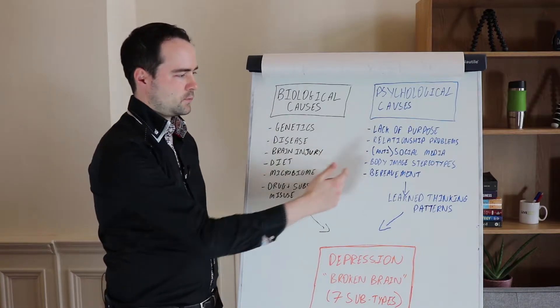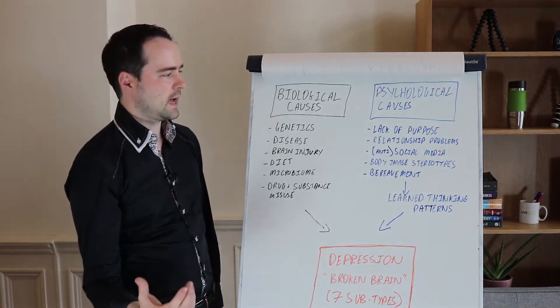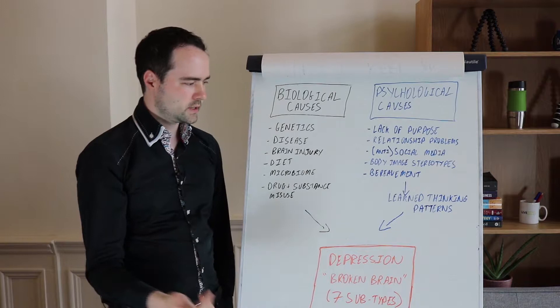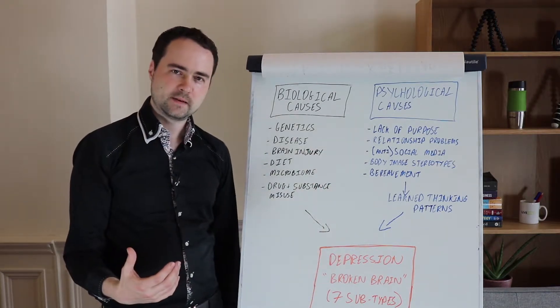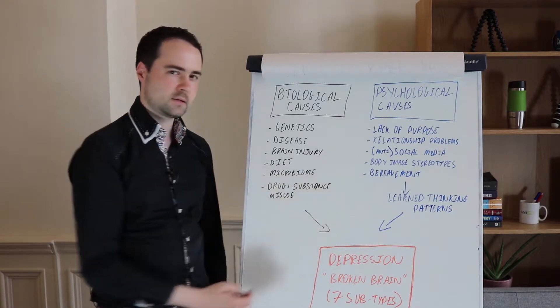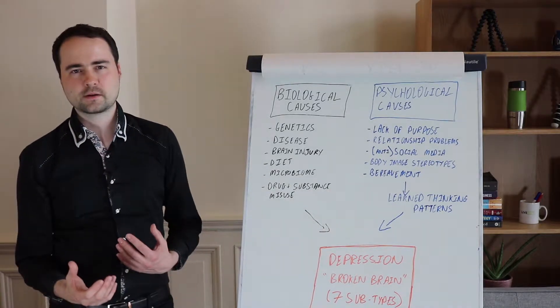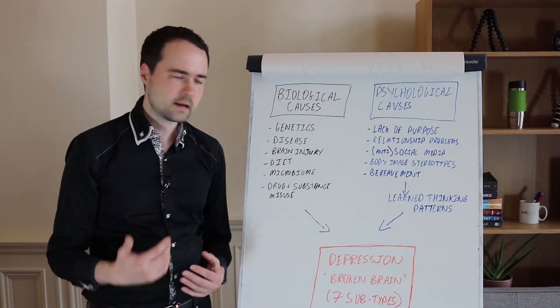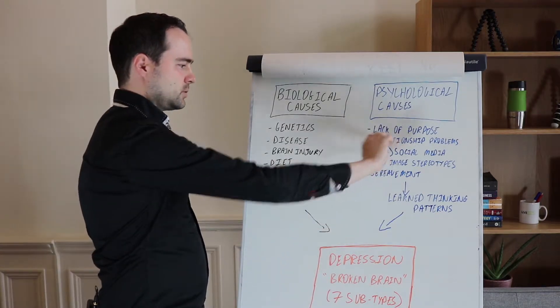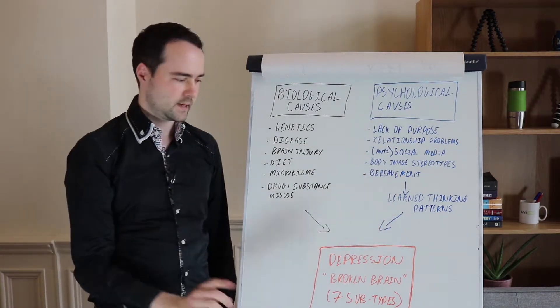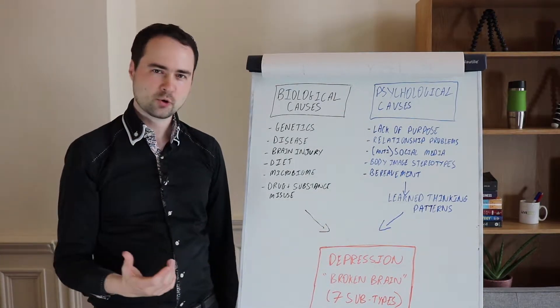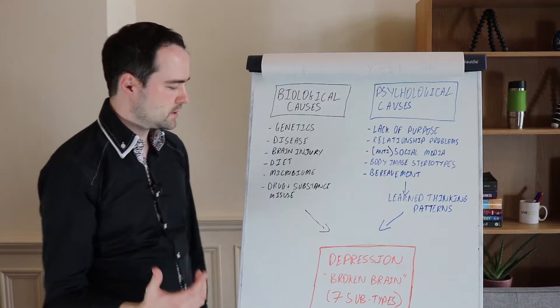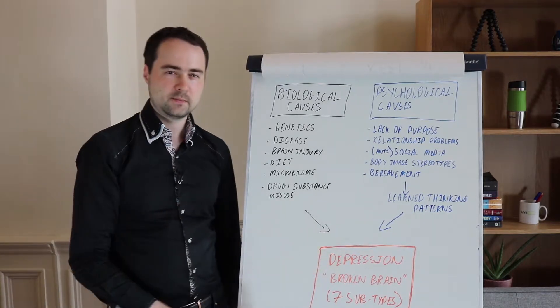These are all things that can happen externally to us. And what happens then is that they then get fed in through the thinking patterns that we developed. And these are thinking patterns that we may have built up as a child. These are thinking patterns that we may have learned throughout our life. But when you combine an external stimuli with a thinking pattern, then you can end up with releasing stress hormones or doing other things that build up to cause problems in the brain.